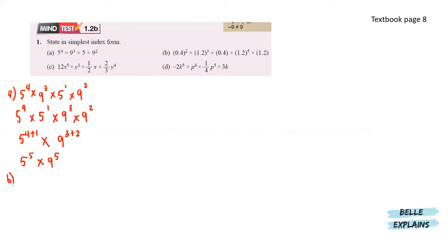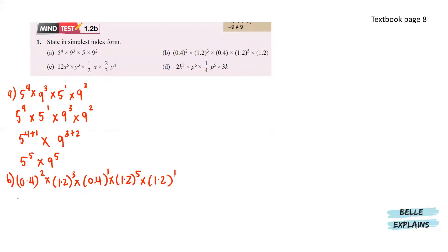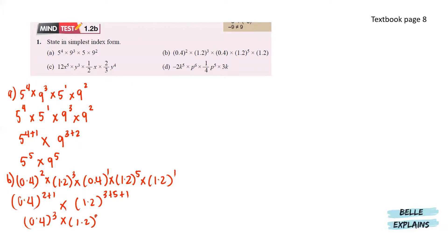Next for b, we have 0.4 to the power of 2 times 1.2 to the power of 3, times 0.4, times 1.2 to the power of 5, and times 1.2. The lone 0.4 and 1.2 each have a power of 1. Putting the 0.4 terms together gives us 2 plus 1, and the 1.2 terms give us 3 plus 5 plus 1. So we have 0.4 to the power of 3 and 1.2 to the power of 9.